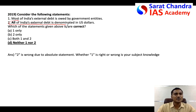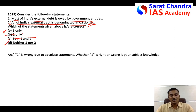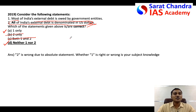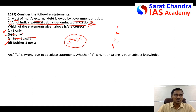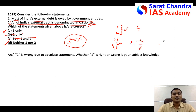Then again, absolute statements are wrong — for example, 'all of India's debt is external in US dollars' — the word 'all' makes it wrong. So statement two is wrong. Now the answer is either A or D. When you are able to eliminate two options and are left with two, go for guessing — 50% probability. If you answer four such questions, two will be correct earning 4 marks, two will be wrong costing minus 4/3, giving a net positive score. So always go for guessing.